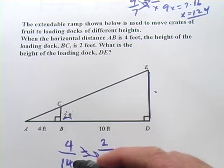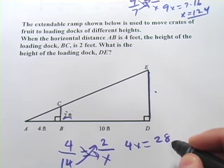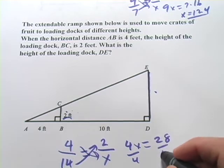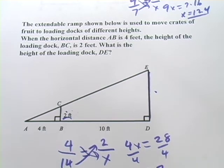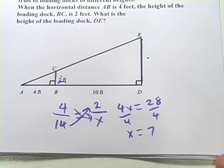Then we can cross multiply and we get 4X equals 28 and divide by 4 and we get X equals 7. All right, one more.